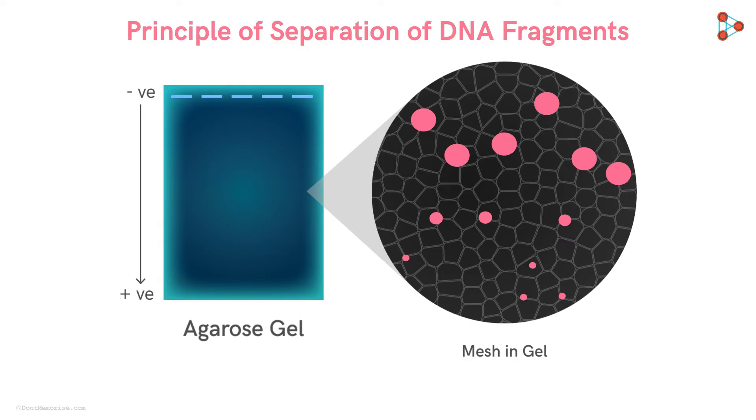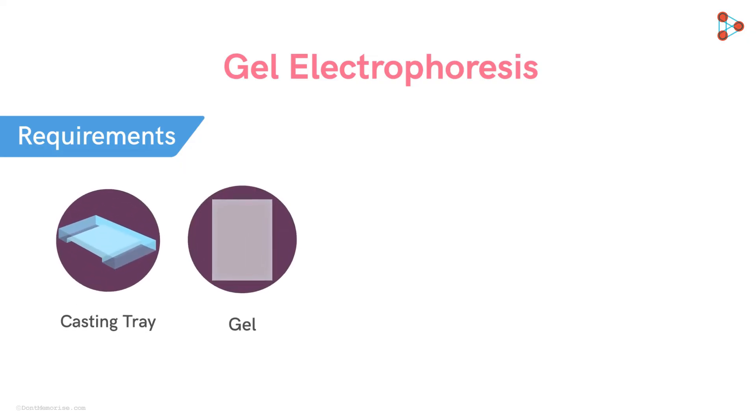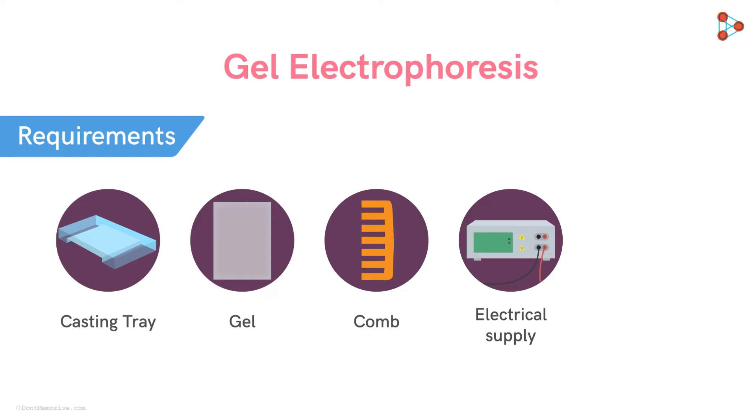Now let's see how the procedure works. The first requirement is the complete setup. This will include the casting tray, gel, a comb for making wells in the gel, electric supply, and most importantly, DNA sample with different sized DNA fragments.